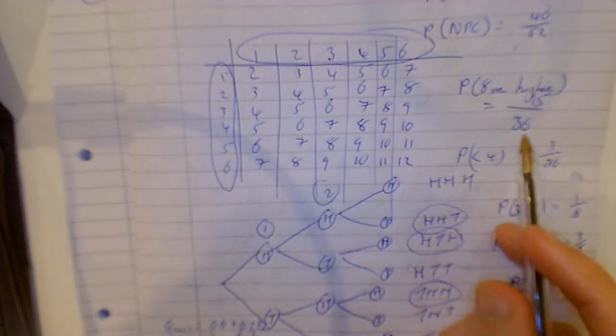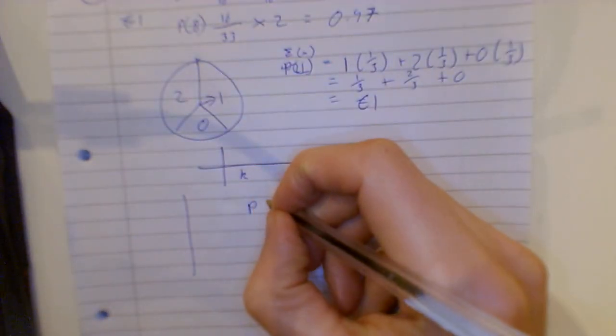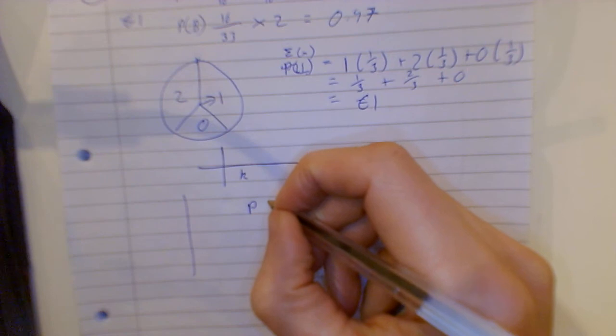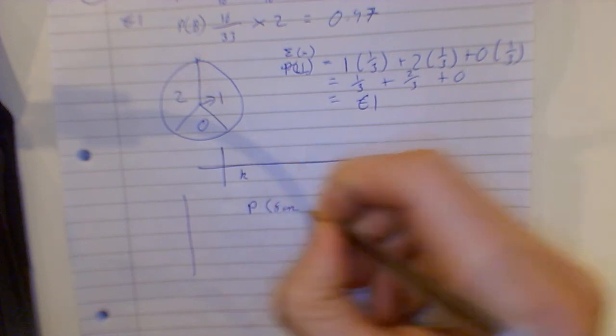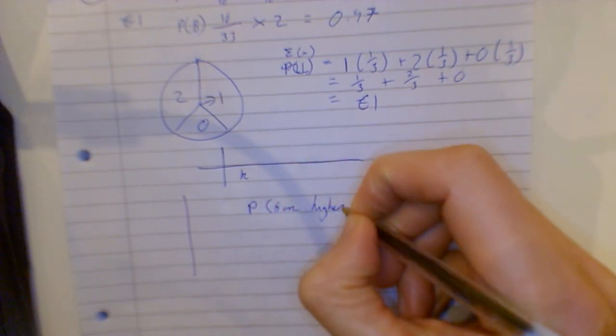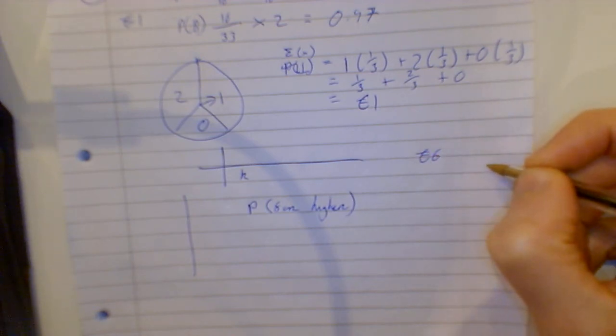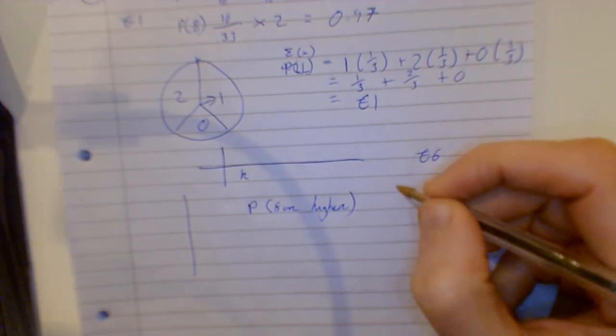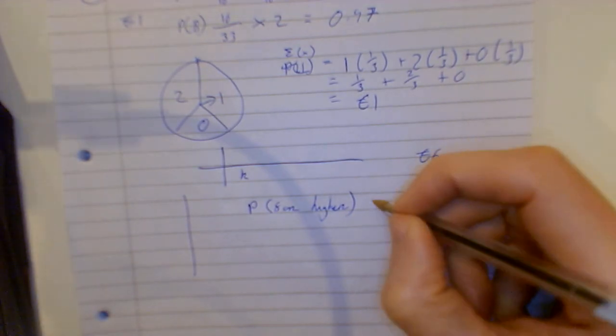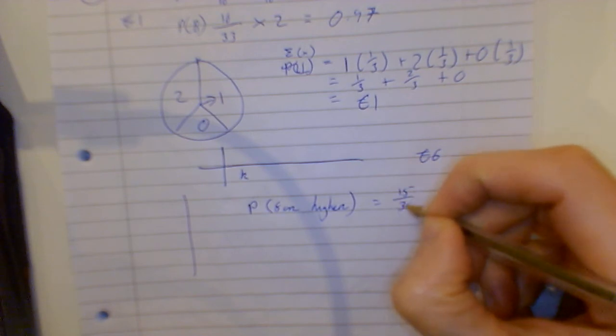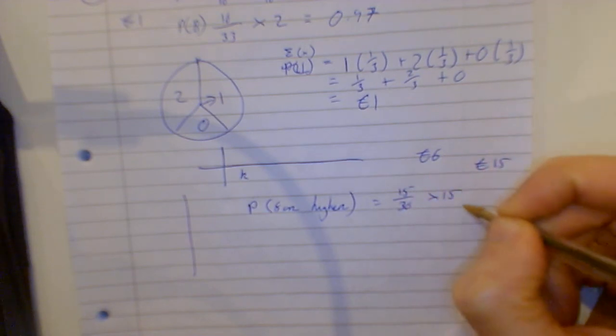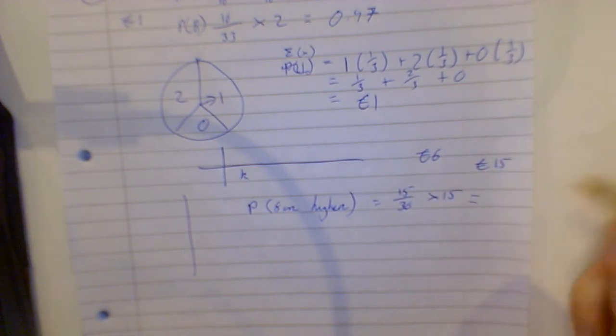And we worked out the probability of getting higher than eight: fifteen out of thirty-six. So probability again. So if I'm running this game, if you get eight or higher, it's six euro to play the game and you will get 15 back. The probability of that was 15 over 36, and you multiply it by the 15.